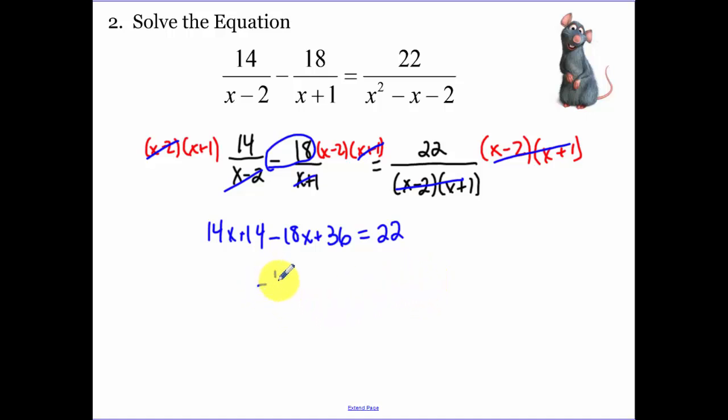Now simplifying this, I have negative 4x plus 50 equals 22. Negative 4x equals negative 28. Therefore, x is going to be 7.